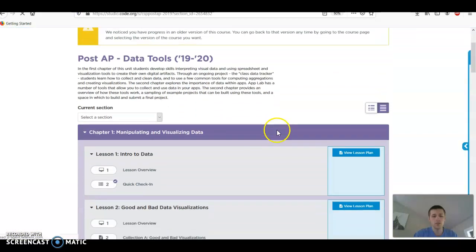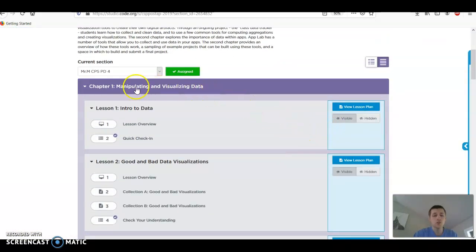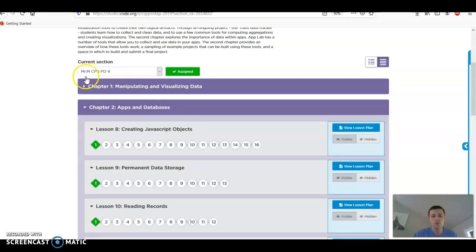and scroll all the way to the bottom to post AP data tools and go to that unit, you find yourself in a similar screen to this. Now there are two chapters here, chapter one, manipulating and visualizing data. We're going to skip that one. We don't have enough time to cover it. And frankly, it's a little bit boring. So you can go ahead and kind of minimize that whole chapter.